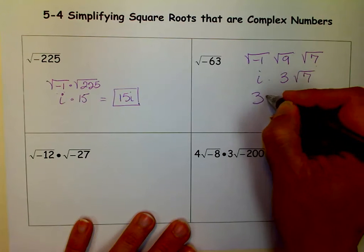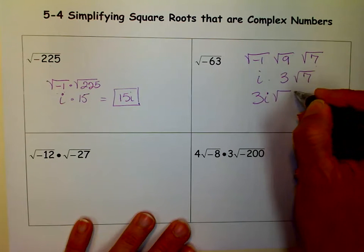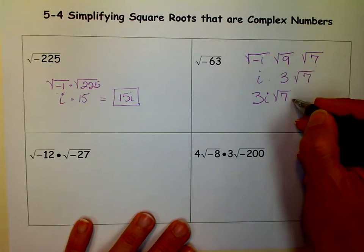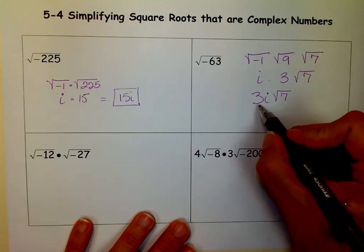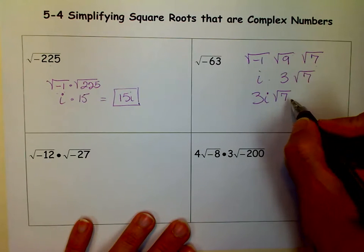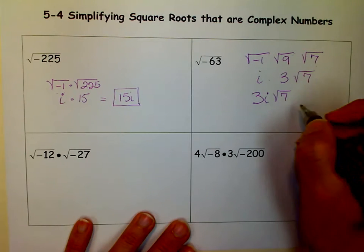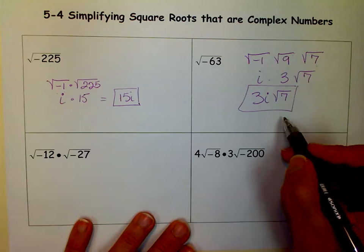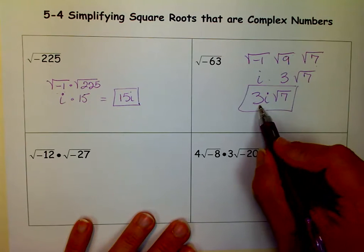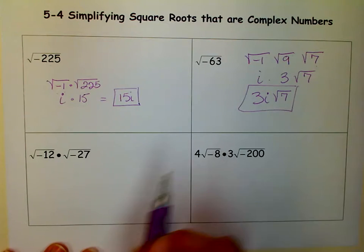So I like to write it with the i in the middle. You'll see some people might write it afterwards. But I like to write it with i in the middle because I don't know if it's after, if it's under the radical or beside the radical. So this is how I like to write it. And you can see how your teacher wants you to write it. But you'll see me write it like this.